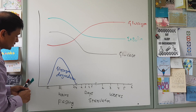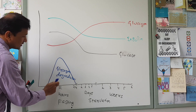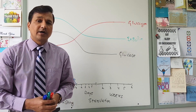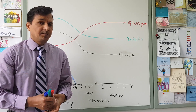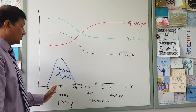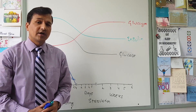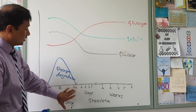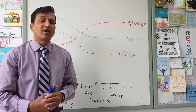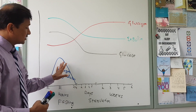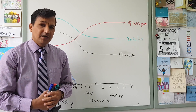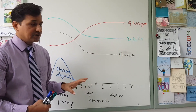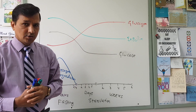Glycogen degradation starts 2 to 3 hours after meals, peaks by 12 hours, and is completely depleted by 24 hours. It can vary from person to person depending on previous carbohydrate intake — some people's glycogen lasts only 12 hours, in others up to 24 hours. In a 70 kg person on a well-balanced diet, glycogen can last 24 hours. This glycogen is broken down to glucose-1-phosphate, converted to glucose, and that maintains blood glucose levels under fasting conditions.